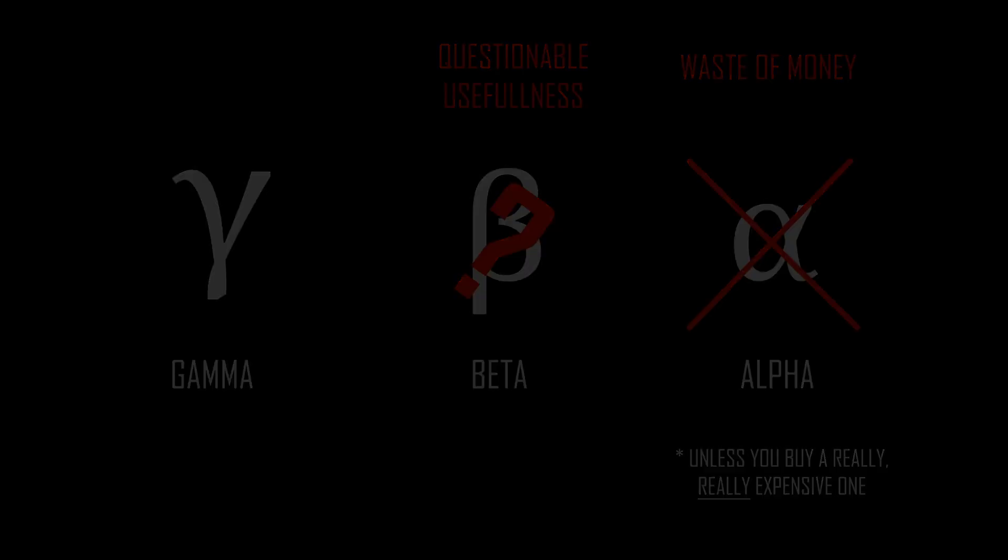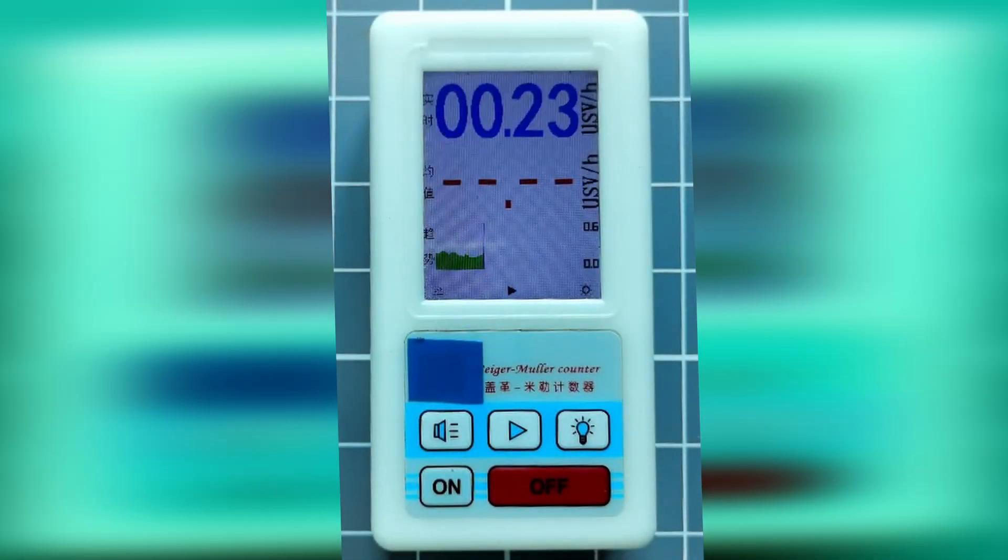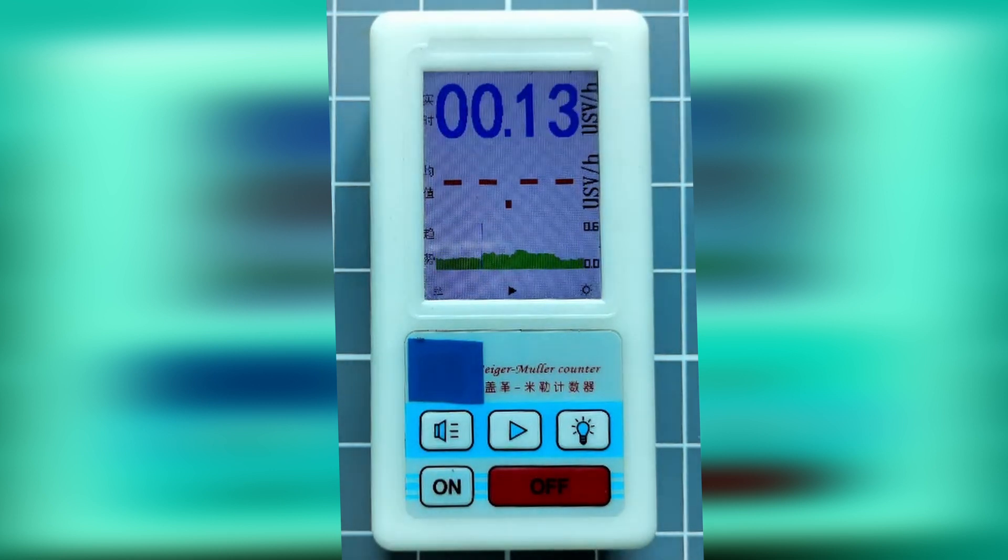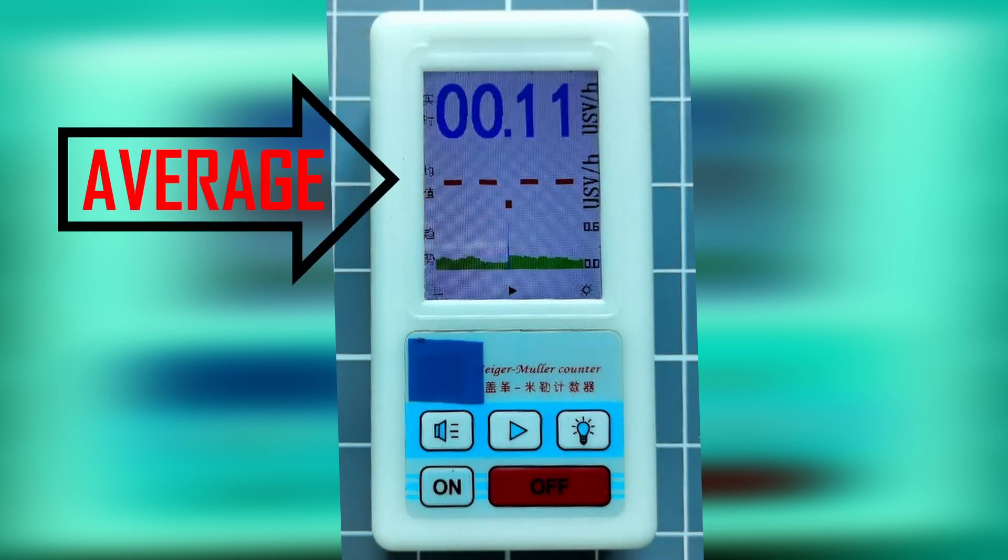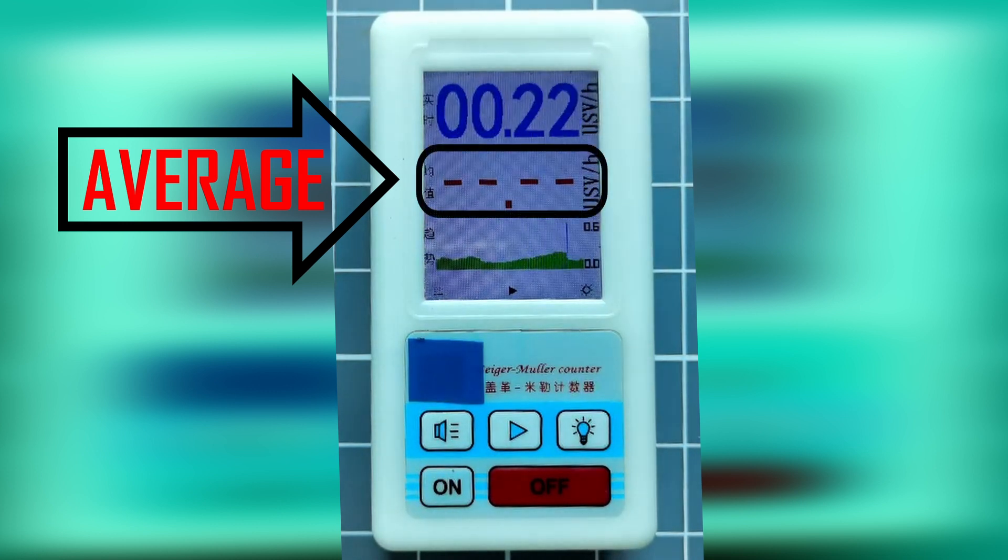The other feature that a useful Geiger counter needs is a display that can show the measured dose rate and, most importantly, the average rate. It is important to be able to get a long duration average value to ensure reasonably stable readings of these relatively low levels of background radiation.